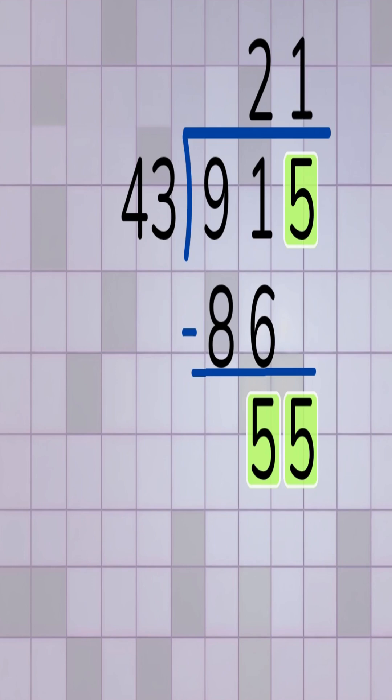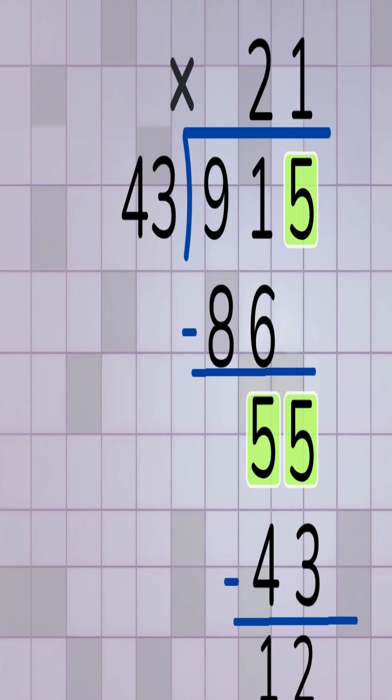We multiply 1 times 43. That gives us 43. Now subtract 43 from 55. 55 minus 43 equals 12. There are no more digits left to bring down. So 12 is our remainder.